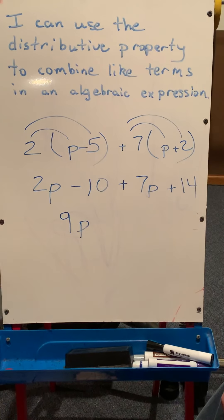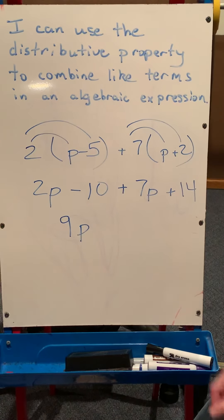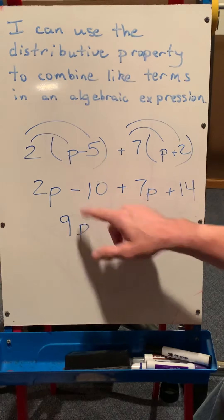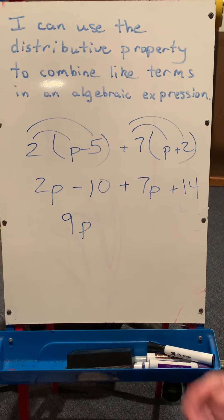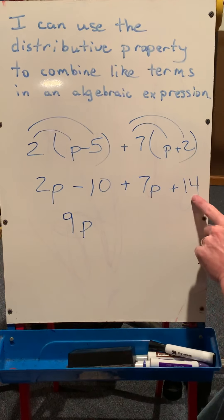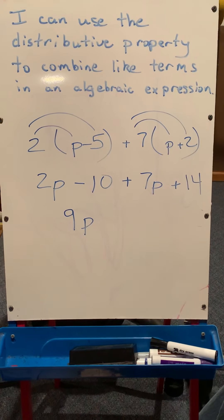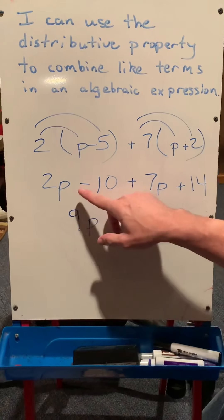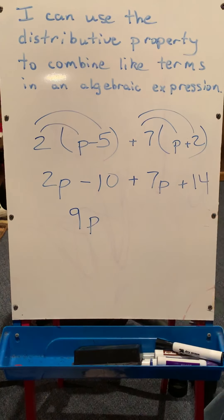But the situation with the numbers is a little bit different this time because we have a negative over here. Subtract 10 is just like a negative 10. So basically, the numbers that I'm combining, I have a negative 10 and a positive 14. So you can look at this different ways, but I can look at it as a negative 10.